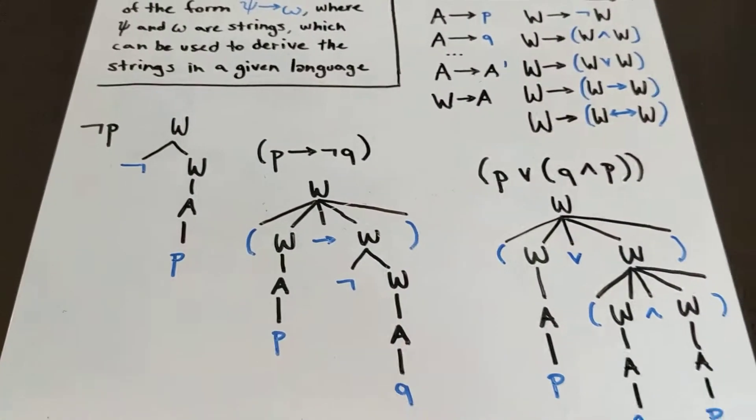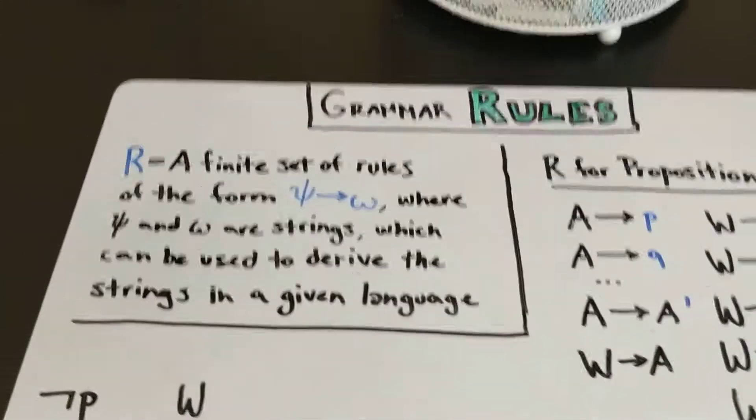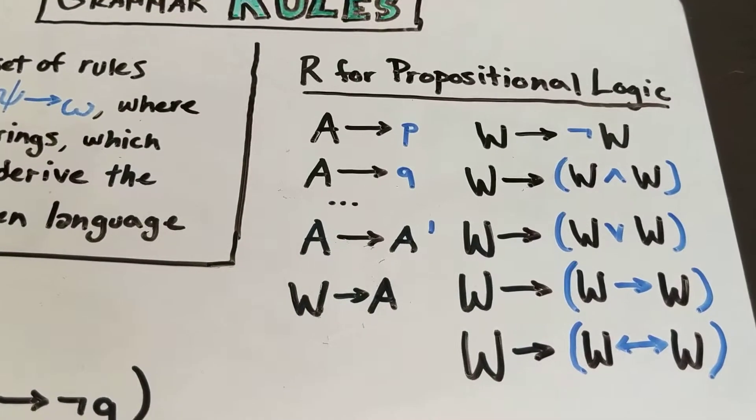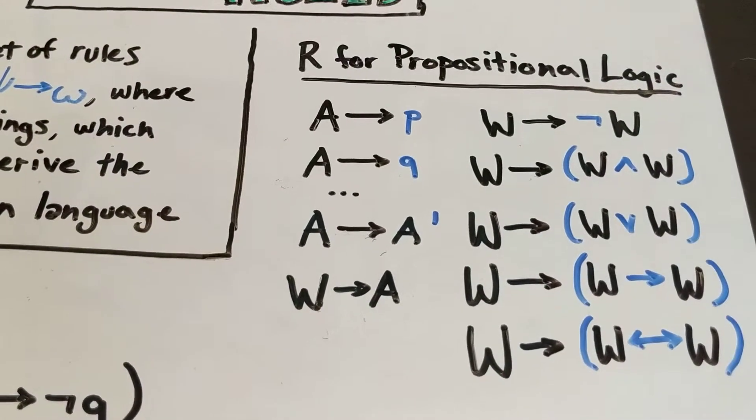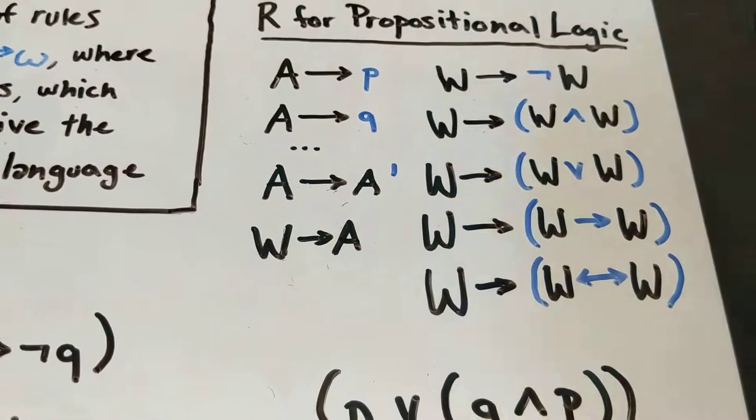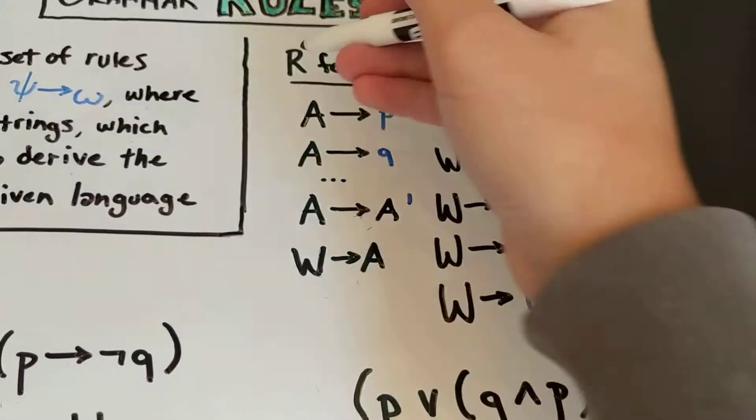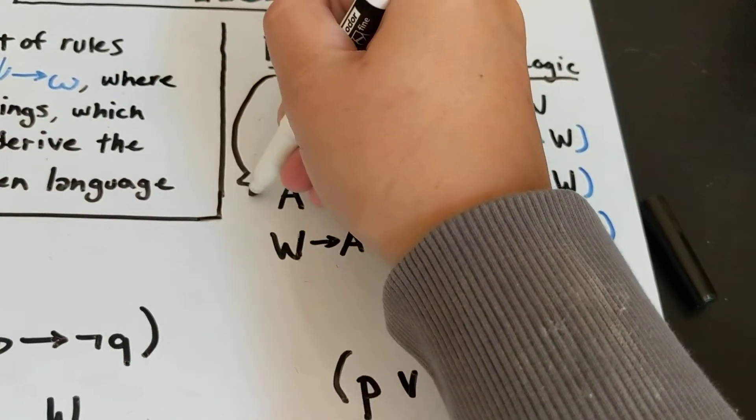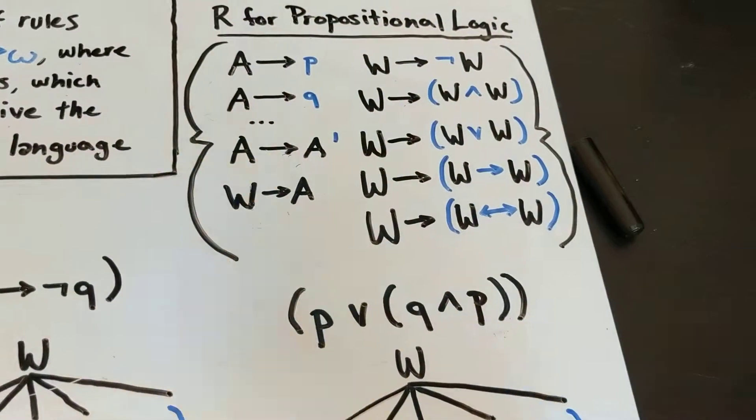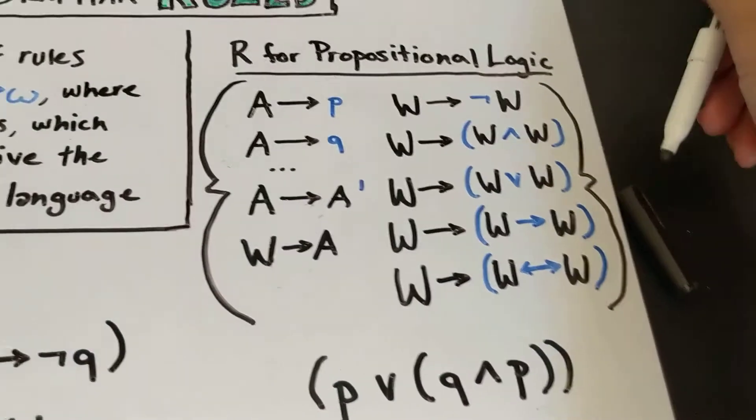So what the rules are basically doing, what we've basically done here is we've taken this sort of casual definition of propositional logic rules that we had before, and we've given it a more formalized description. So this is just a set. This whole thing is just a set of statements like this that let us determine this.